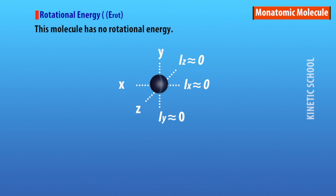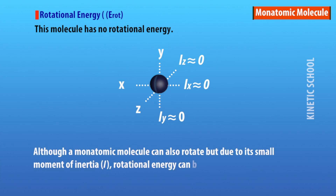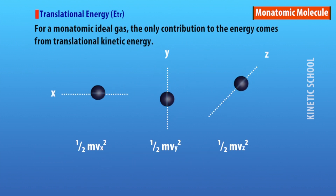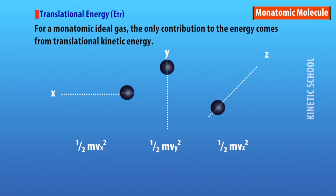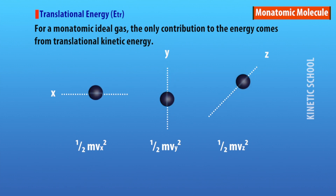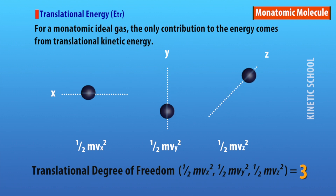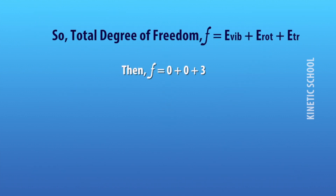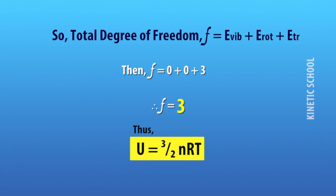A monatomic molecule has no rotational energy — although it can rotate, its moment of inertia is so small that rotational energy is neglected. For a monatomic ideal gas, the only contribution to energy comes from translational kinetic energy, giving a translational degree of freedom of three, so the total degree of freedom f = 3, and U = (3/2)nRT.